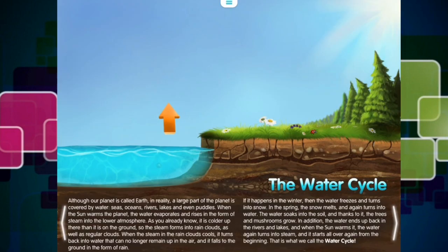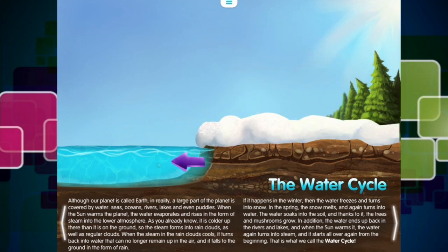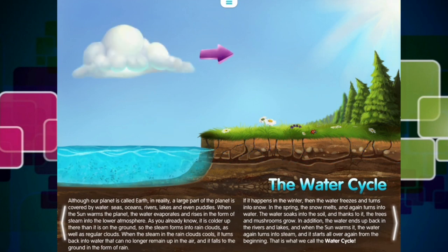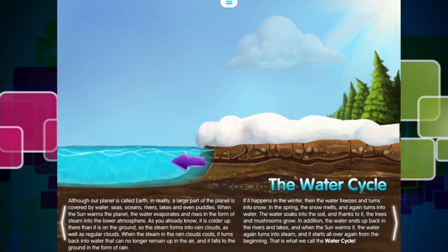Although our planet is called Earth, in reality, a large part of the planet is covered by water. Seas, oceans, rivers, lakes, and even puddles. When the sun warms the planet, the water evaporates and rises in the form of steam into the lower atmosphere. As you already know, it is colder up there than it is on the ground, so the steam forms into rain clouds, as well as regular clouds.